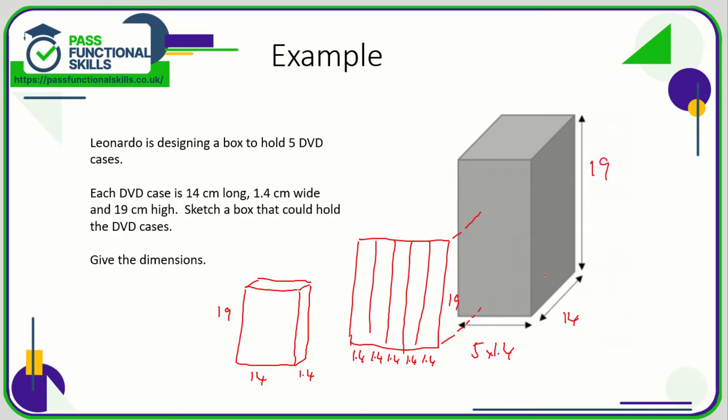So all we need to do is work out what 5 times 1.4 is, and 5 times 1.4 is 7. So we basically just need a box which is 7 across, 19 high, and 14 centimeters deep. Should probably also label the units as well. So there is our box.